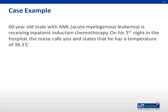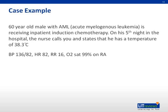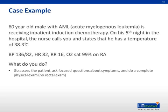Here is a case example. A 60-year-old male with acute myelogenous leukemia is receiving inpatient induction chemotherapy. On his fifth night in the hospital, the nurse calls and states that he has a fever to 38.3. His vital signs, including blood pressure and heart rate, are stable and he's not hypoxic. What do you do first? The right first step is to go assess the patient, ask focused questions about their symptoms, and do a complete physical exam.